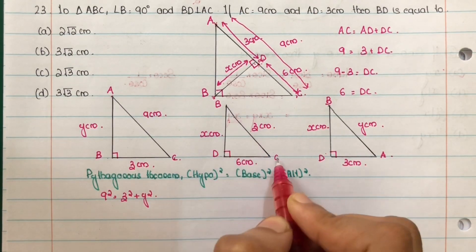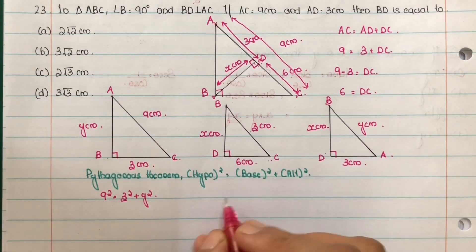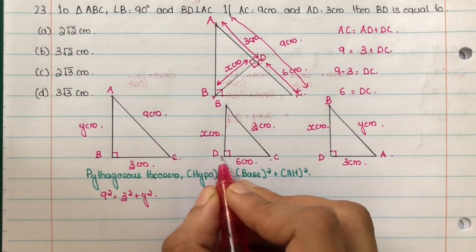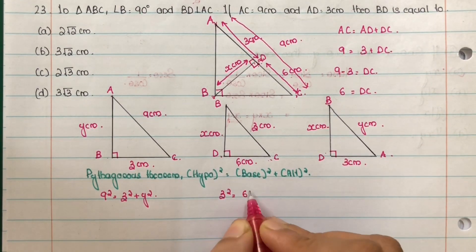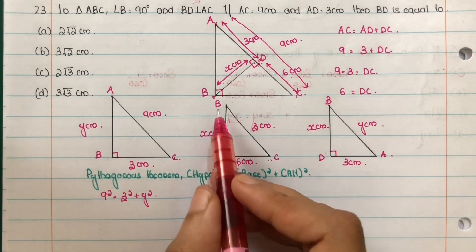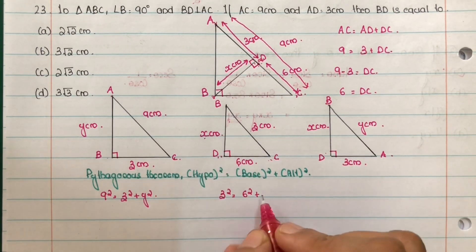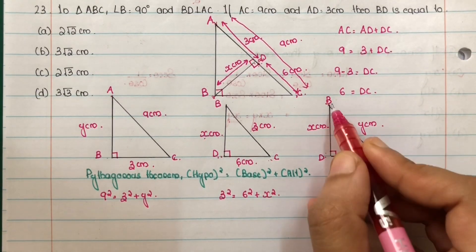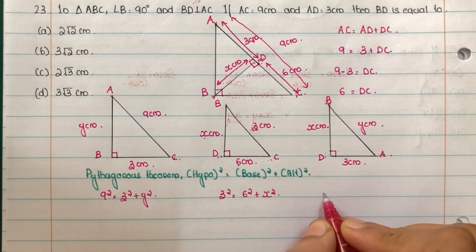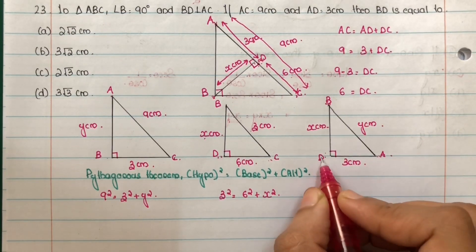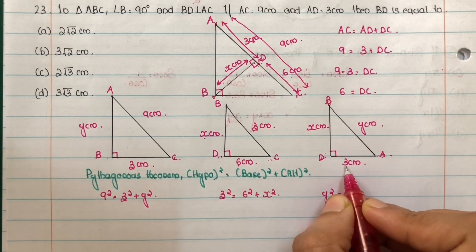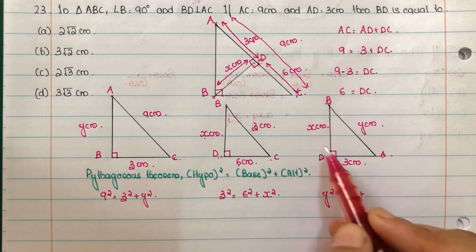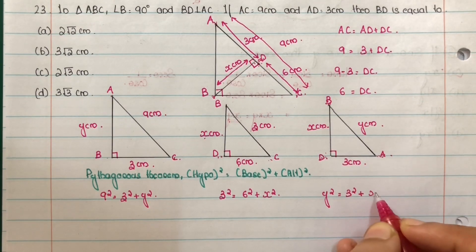Next, in triangle BDA, hypotenuse is AB. AB equal to y. So, hypotenuse square is y square is equal to base, that is DA. DA is 3. So, base square, 3 square, plus altitude, that is BD equal to x. Altitude square is x square.